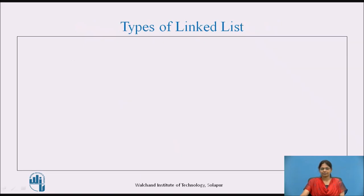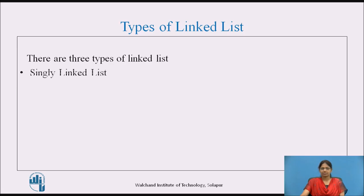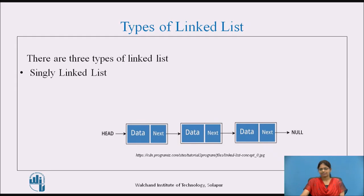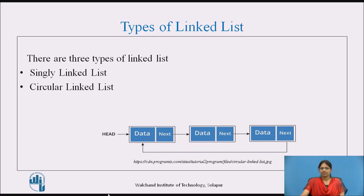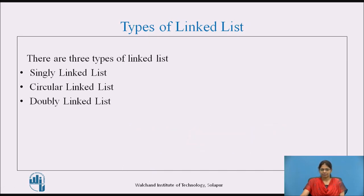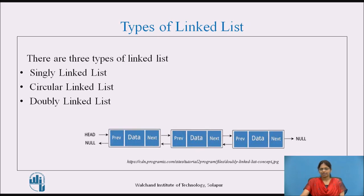Types of linked list: There are three types. The first is the singly linked list, which has only a single link to the next node. Next is the circular linked list, which is not terminated by null; instead, a link goes from the last node back to the first node. The third is the doubly linked list, which has two links — one going to the next node and the other going to the previous node.